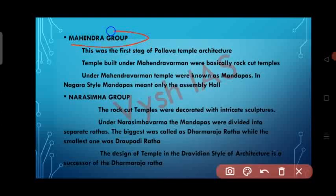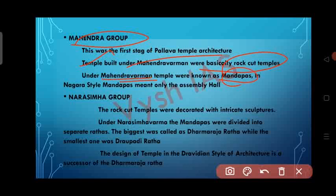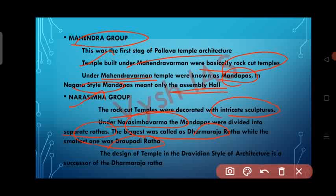The first stage is the Mahendra group, the first stage of Pallava architecture. Temples built under Mahendra Varman were basically rock-cut caves, and under Mahendra Varman the temples were known as Mandapas — whereas in the Nagara style, Mandapas were meant only as assembly halls. In the Narasimha group, the rock temples were decorated with intricate sculptures. Under Narasimha Varman, the Mandapas were divided into separate Rathas: the biggest was called Dharmaraja Ratha and the smallest was Draupadi Ratha. The design of Dravidian-style temples is a successor of the Dharmaraja Ratha.